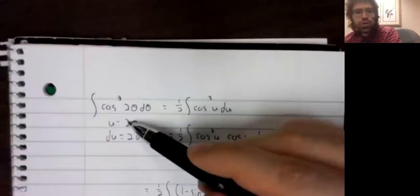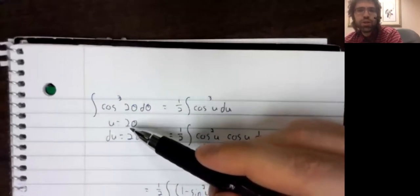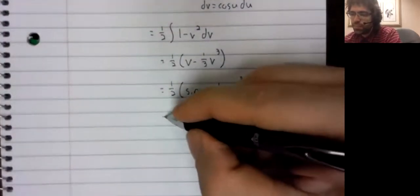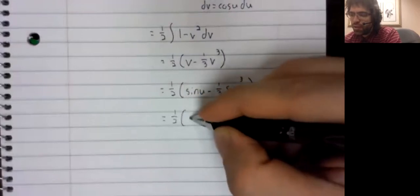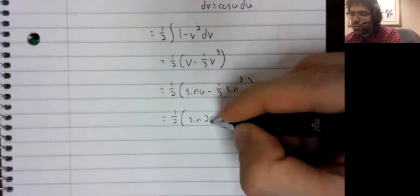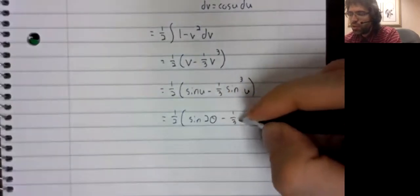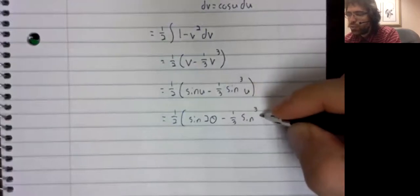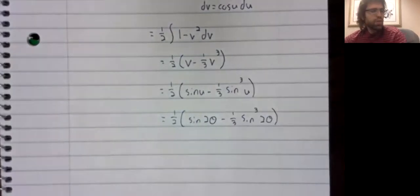But u is itself a dummy variable. It's two theta. One half the sine of two theta minus one sixth the sine of two theta cubed.